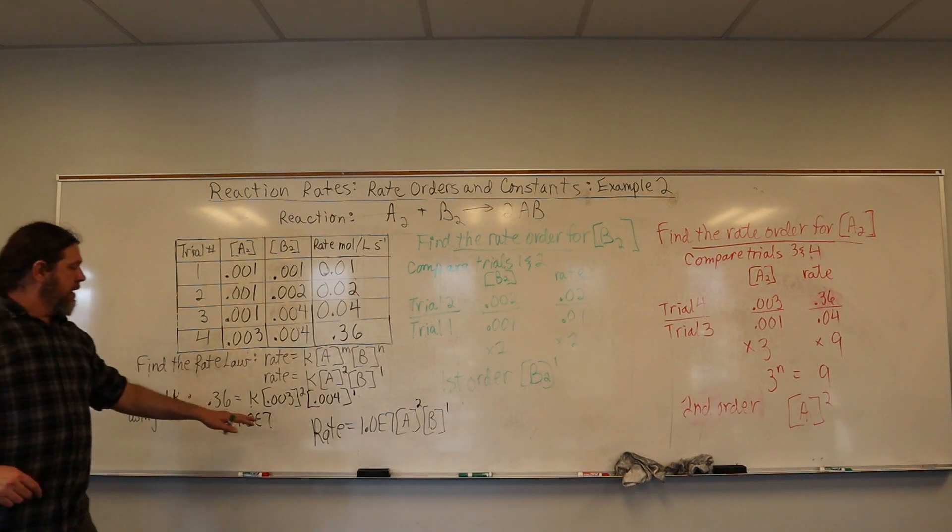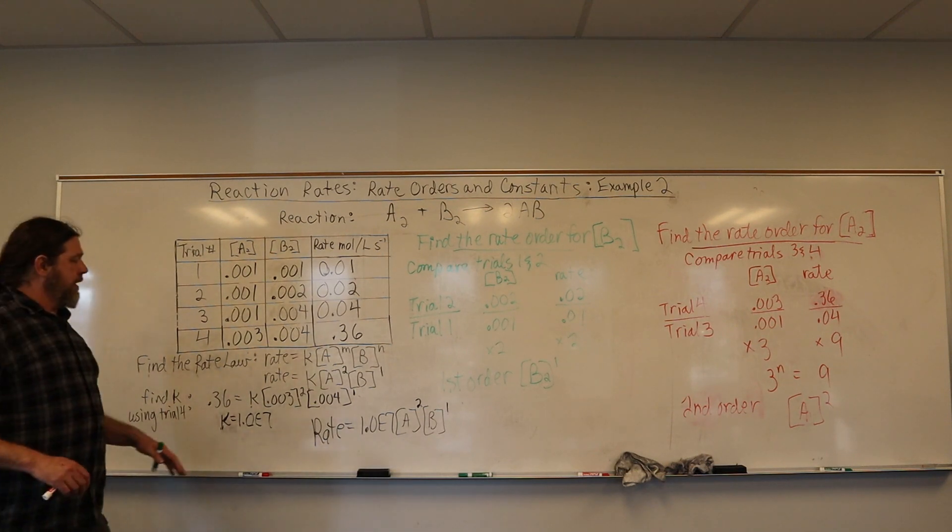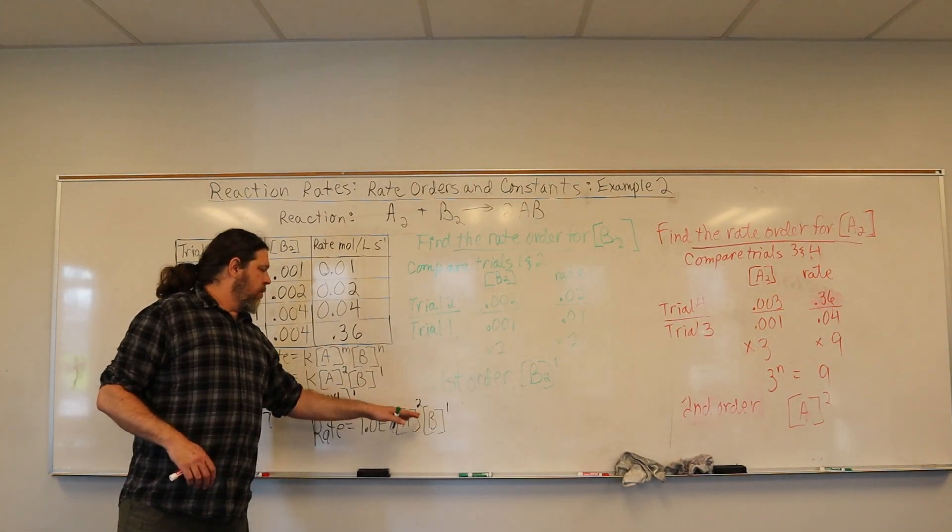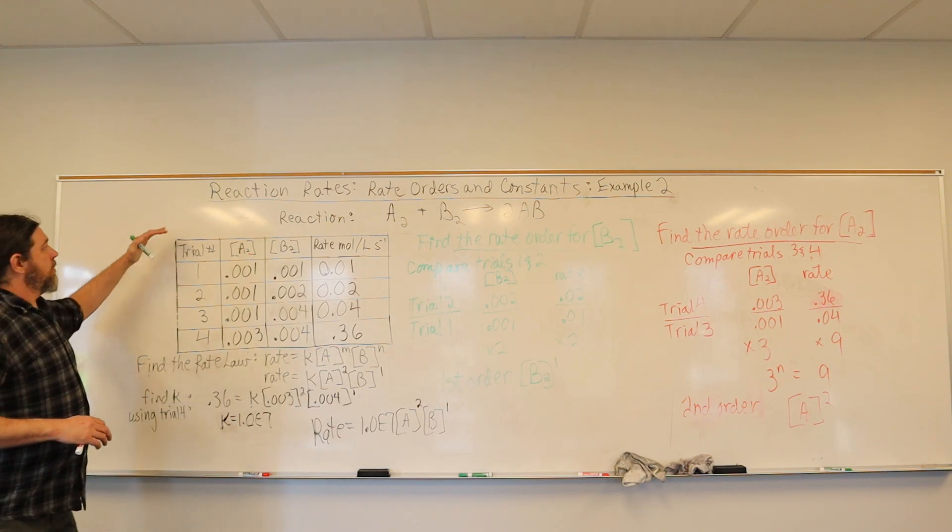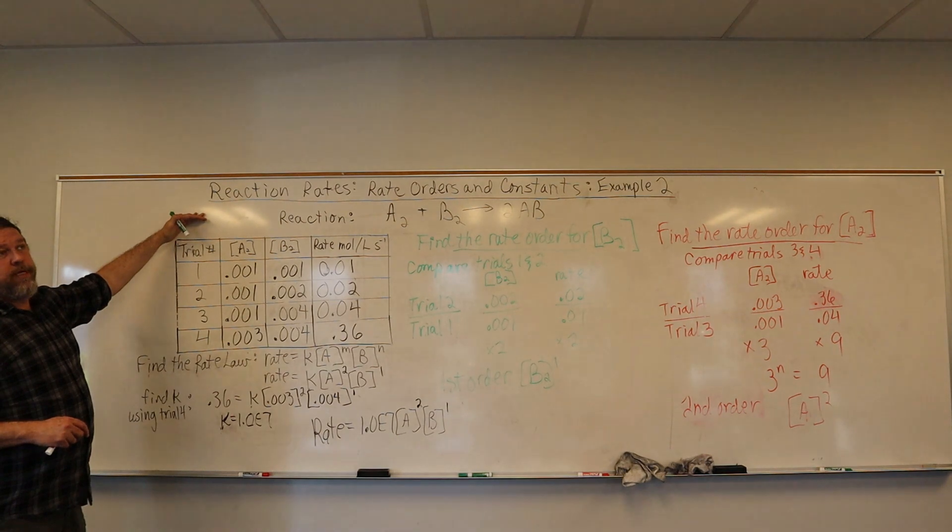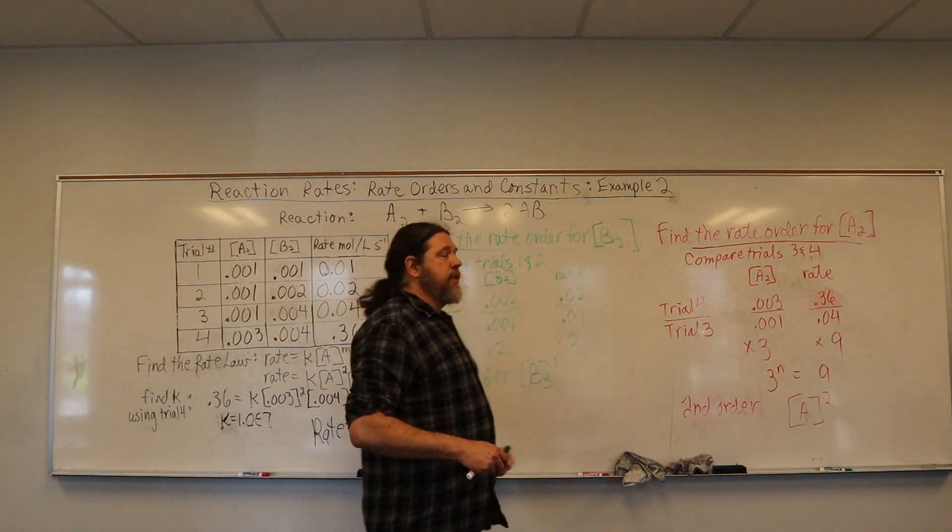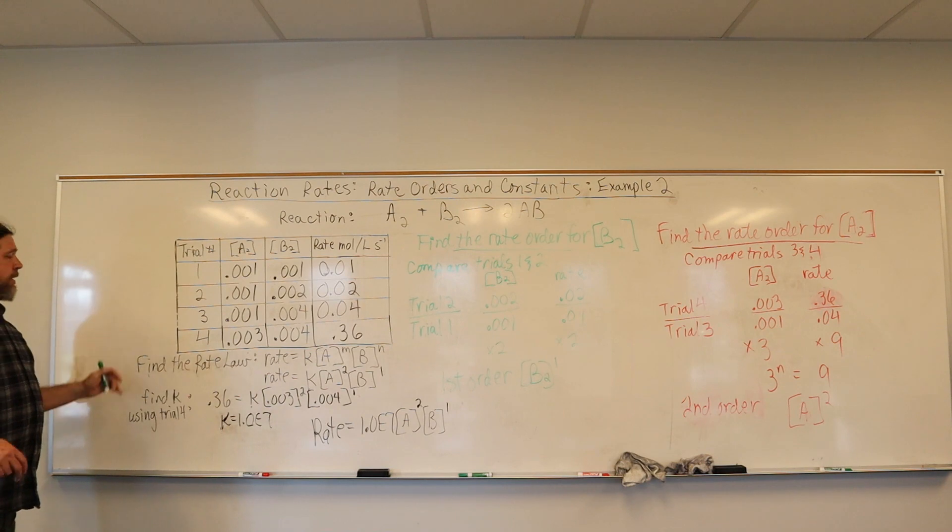Now we can have our fundamental rate law here. The rate is our constant of 1E7 times A squared times B. And thus we have solved for a rate law for this particular reaction. It will always be different for every different type of reaction based on the data by first finding the rate orders for each reactant and then plugging in data from any trial we choose to solve for K constant.